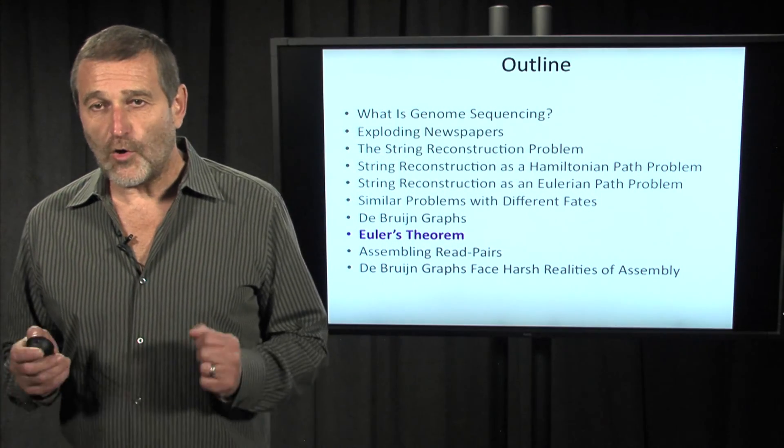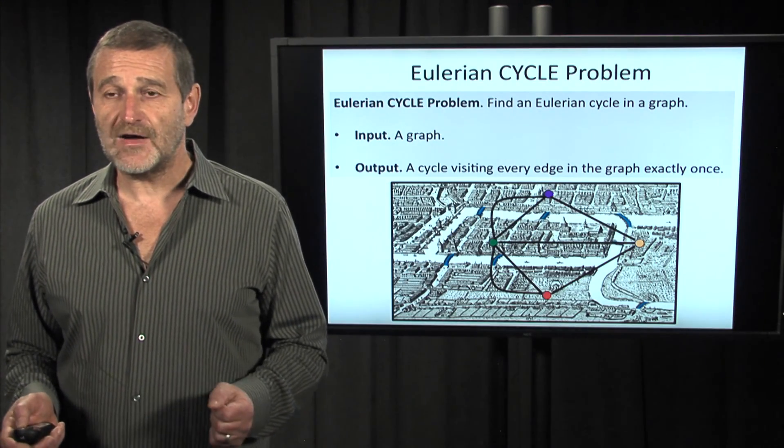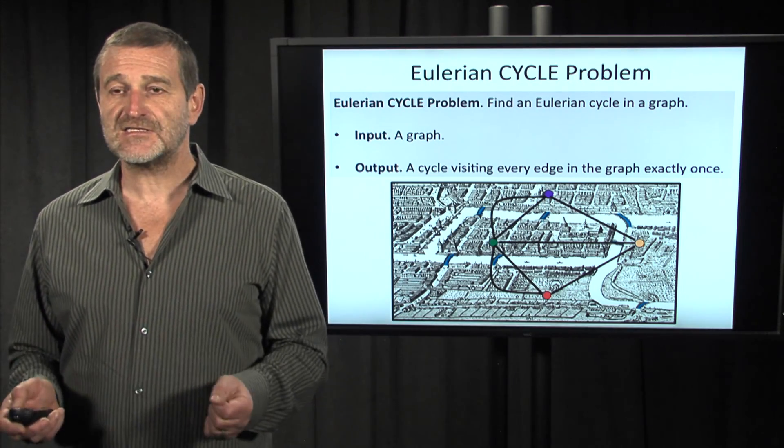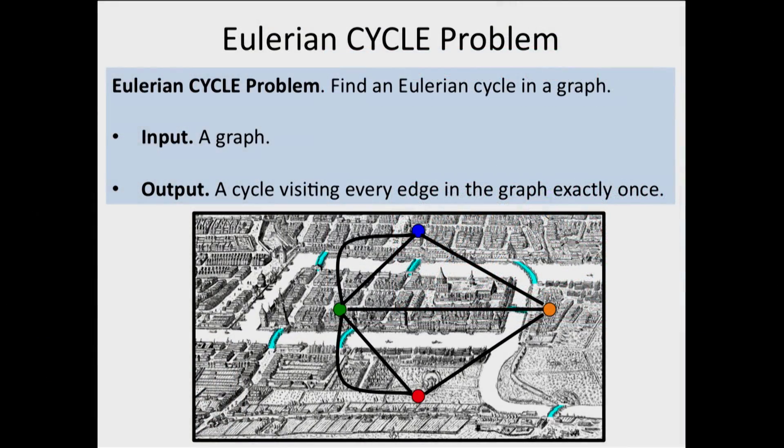We are now ready to prove Euler's theorem that will help us find paths visiting every edge in the graph exactly once. Actually, we will be focusing on the Eulerian cycle problem: find cycles that visit every edge in the graph, because Euler was interested in a walk through Königsberg that starts and ends at the same place.